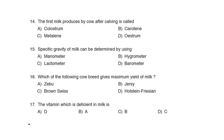14th Question: The first milk produced by a cow after calving is called Option A: Colostrum. 15th Question: Specific gravity of milk can be determined by using a Lactometer. 16th Question: Which of the following cow breeds gives maximum yield of milk? Correct Answer: Option B: Jersey.